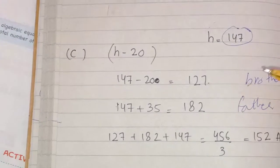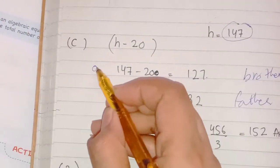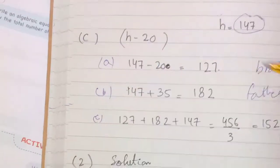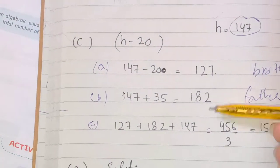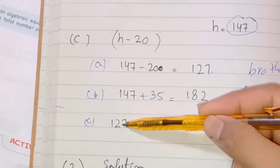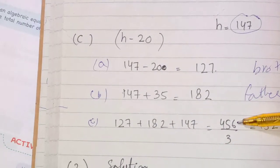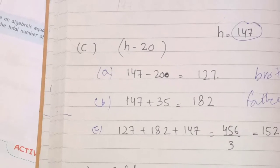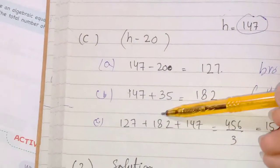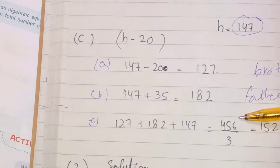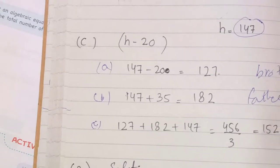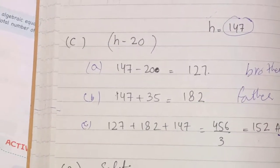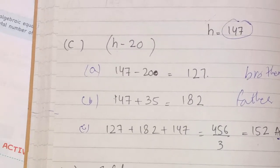Now we find the average of all three heights. We add Ahmed's height (147), his brother's height (127), and his father's height (182): 127 plus 182 plus 147 equals 456, divided by 3 equals 152. So the average height of all of them is 152 centimeters.